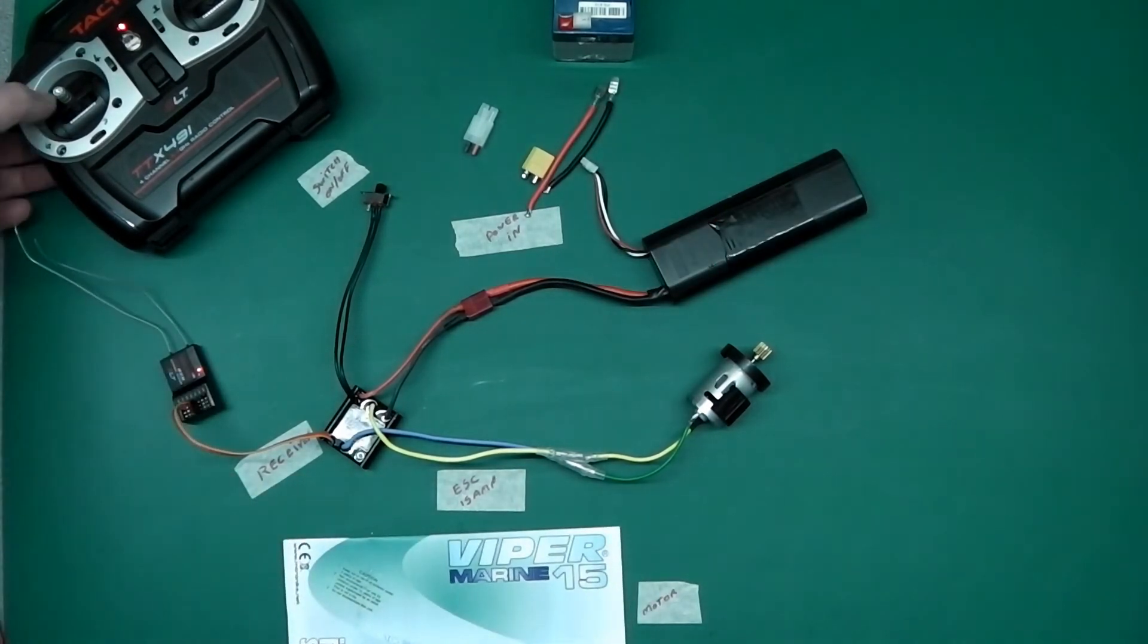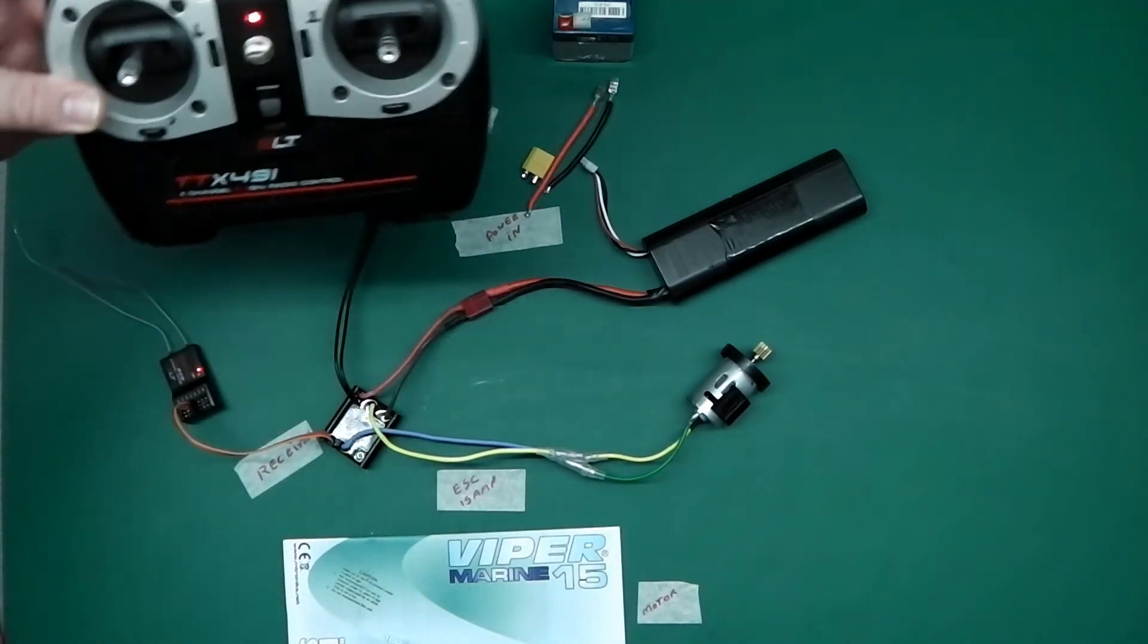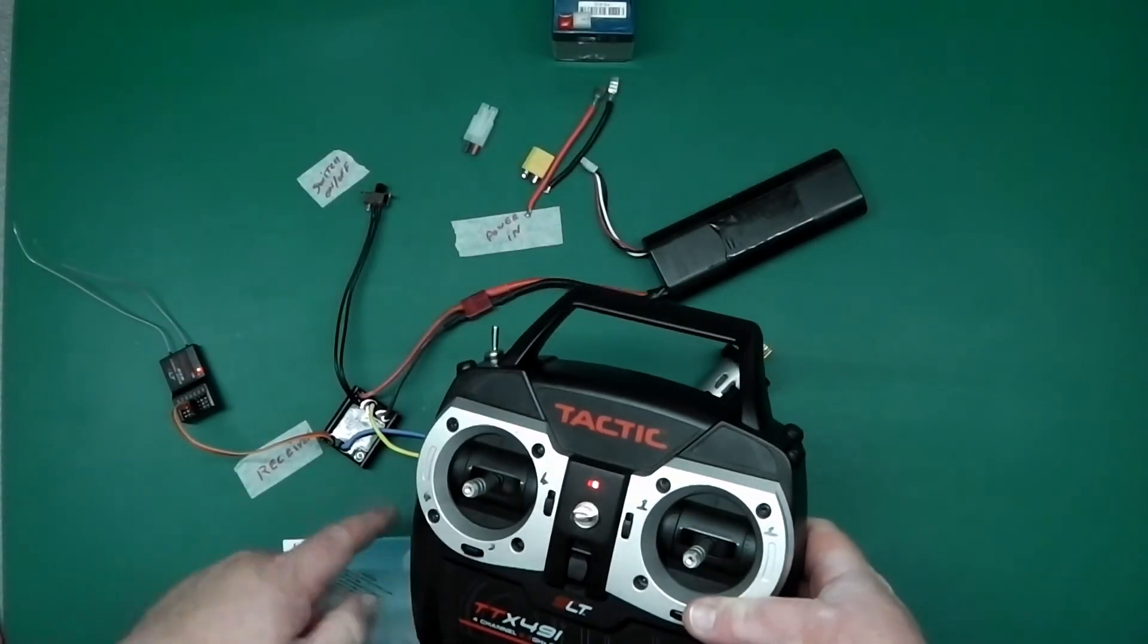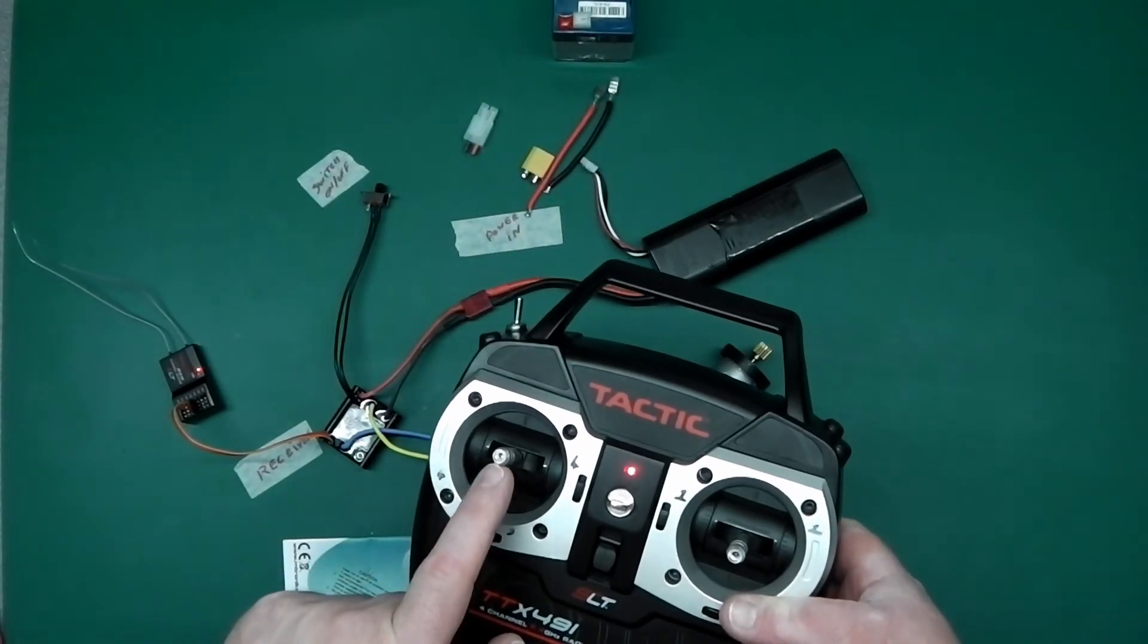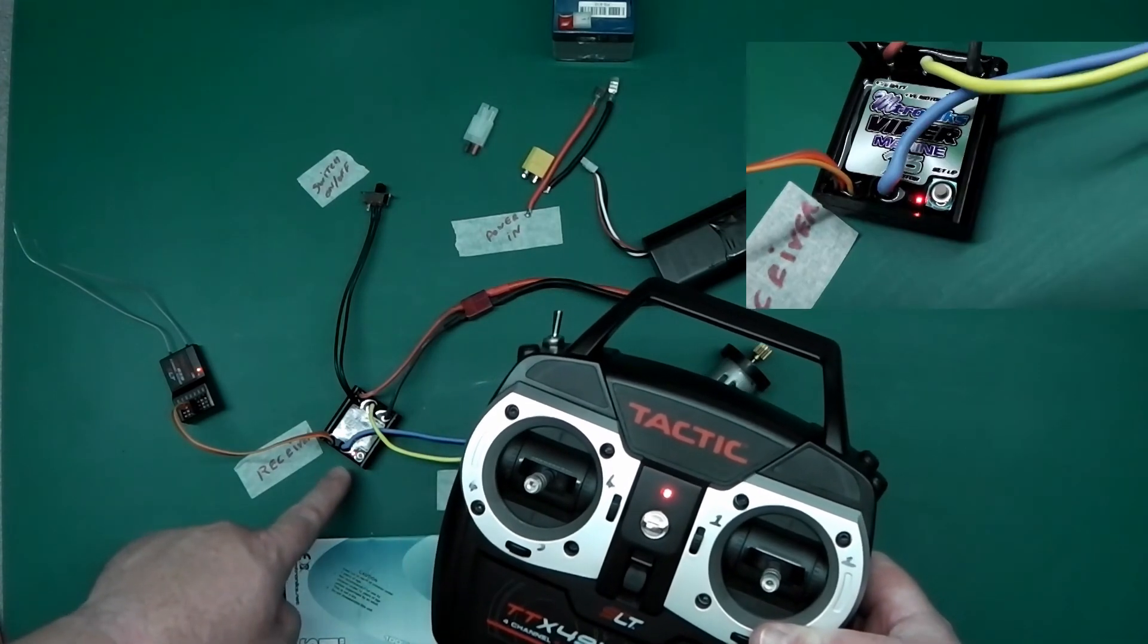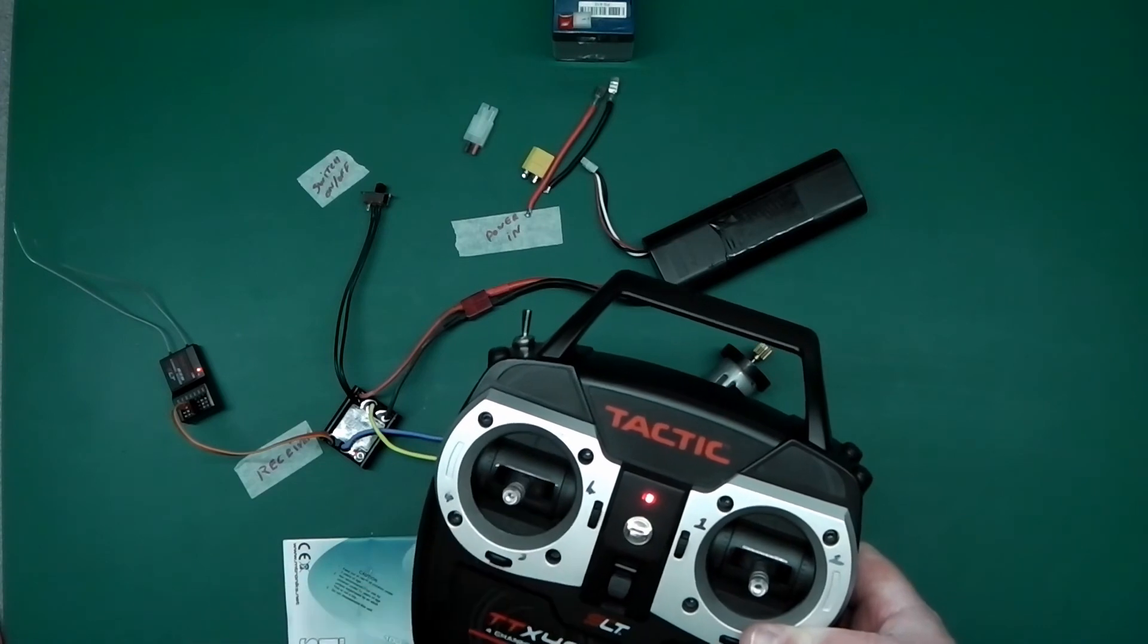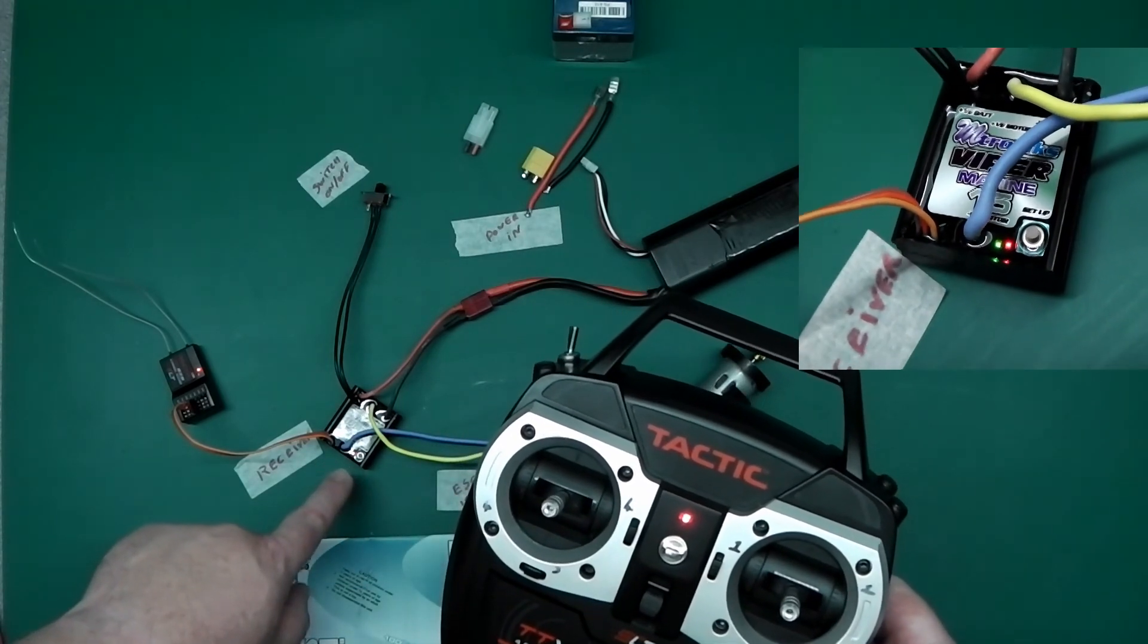Get your transmitter and move the stick all the way up. So, let's do this. So, you can see. Green light. Move it up. And back to the center. It goes red. Now, move it back down. And back to the center. Green and red.